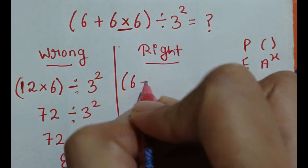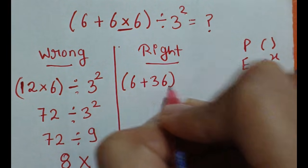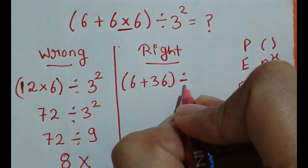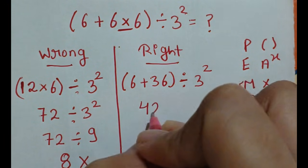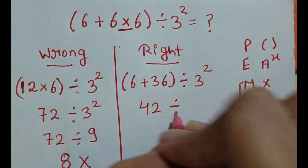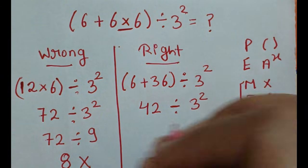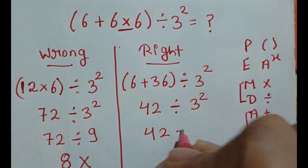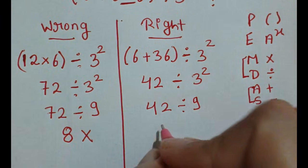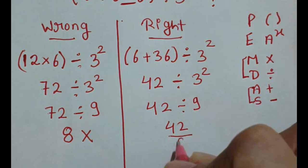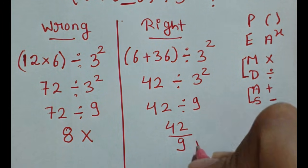So 6 times 6 is 36, divide by 3 square. Then 6 plus 36 which is 42, divide by 3 square. Then 42 divide by 9. So 42 over 9 is the final answer for this expression.